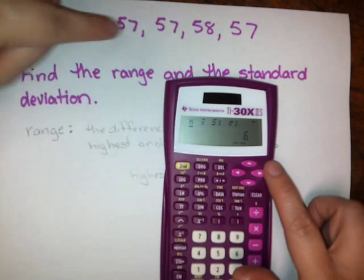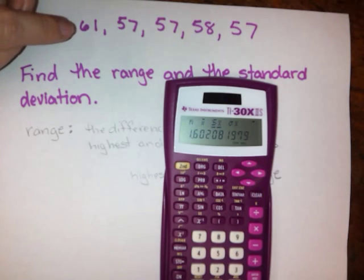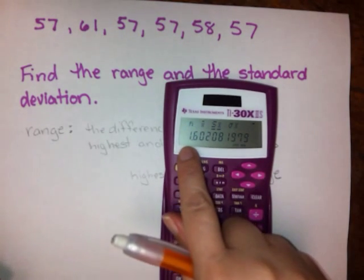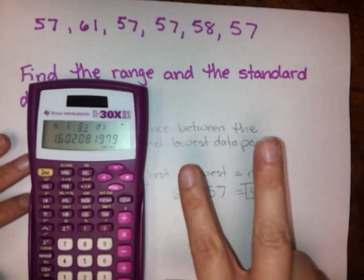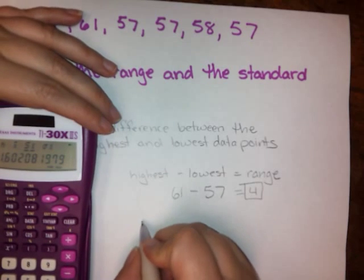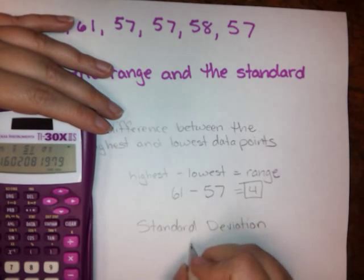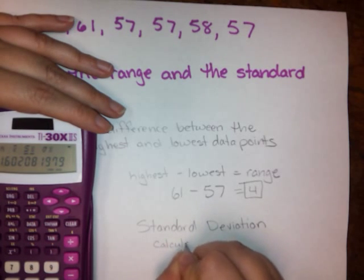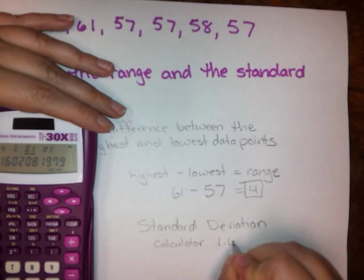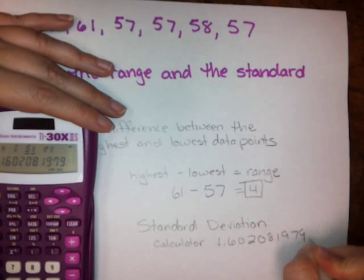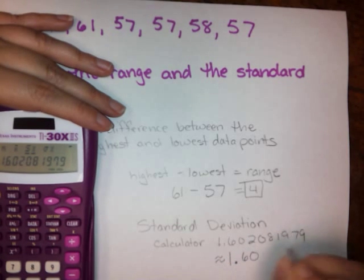Here we go. Stat var. Six items. The mean is 57.83. There we go. Standard deviation. That's what I was looking for. It's telling me it's one of the things that I was looking for. 1.602081979. Standard deviation we are going to round to two decimal places. So for the standard deviation after entering that in my calculator. Standard deviation from the calculator. It gave me, calculator gave me 1.602081979. But standard deviation, I round to two places. That gives me 1.60 in this case.